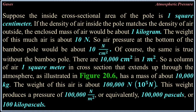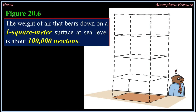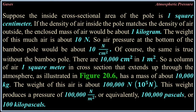Of course, the same is true without the bamboo pole. There are 10,000 square centimeters in 1 square meter, so a column of air 1 square meter in cross-sectional area extending up through the atmosphere has a mass of about 10,000 kilograms. The weight of this air is about 100,000 newtons (10⁵ newtons). This produces a pressure of 100,000 newtons per square meter — equivalently, 100,000 pascals or 100 kilopascals.